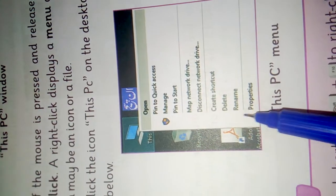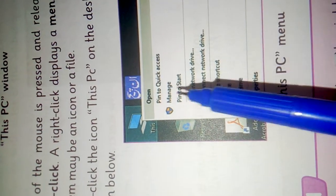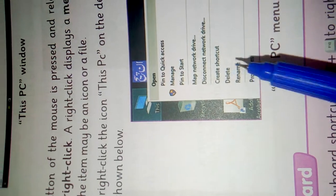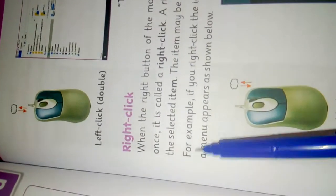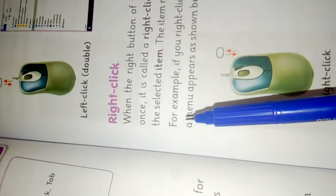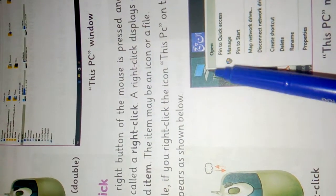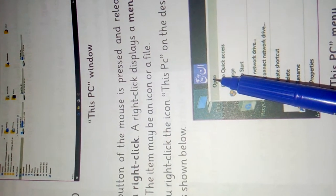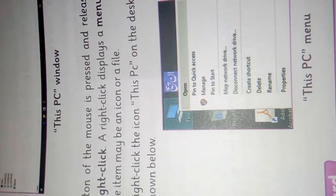We can delete, rename, create a shortcut, and open. We have all these options. We will select the desired option. For example, if you right-click the icon on the desktop, a menu appears as shown. The submenu will open and you can select your desired option.